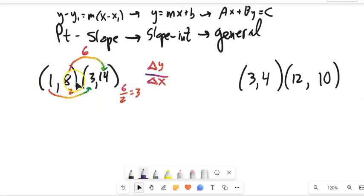I'm just going to grab this first point. y minus the y part equals the slope times x minus the x part. So here it is in point-slope form.